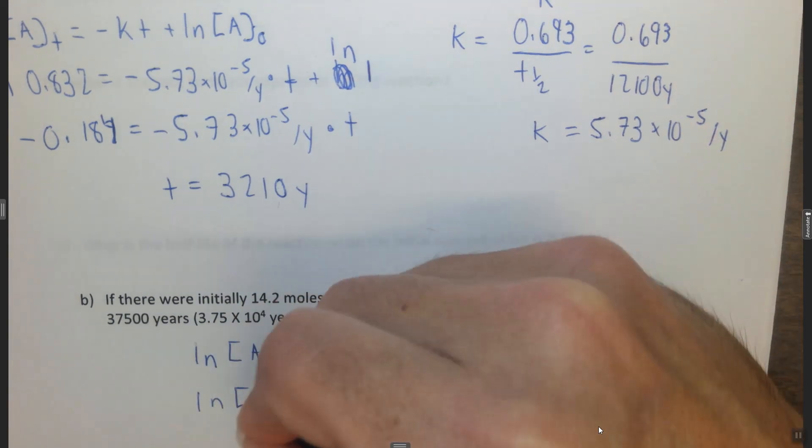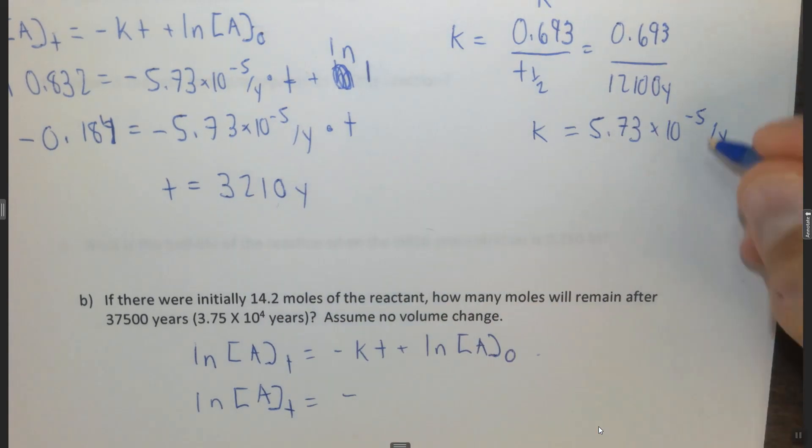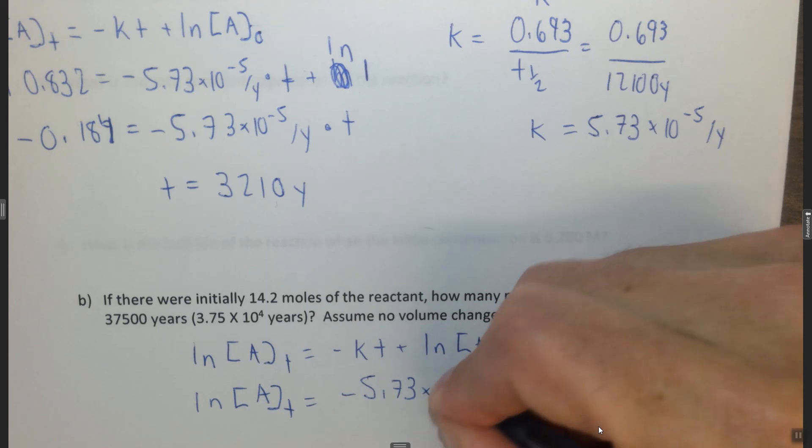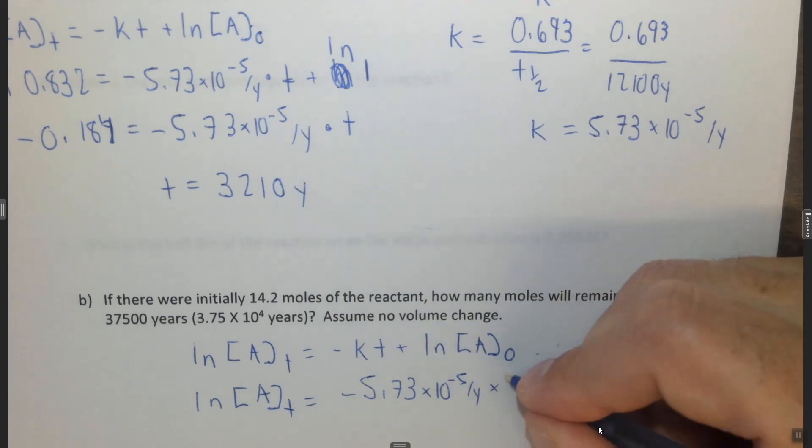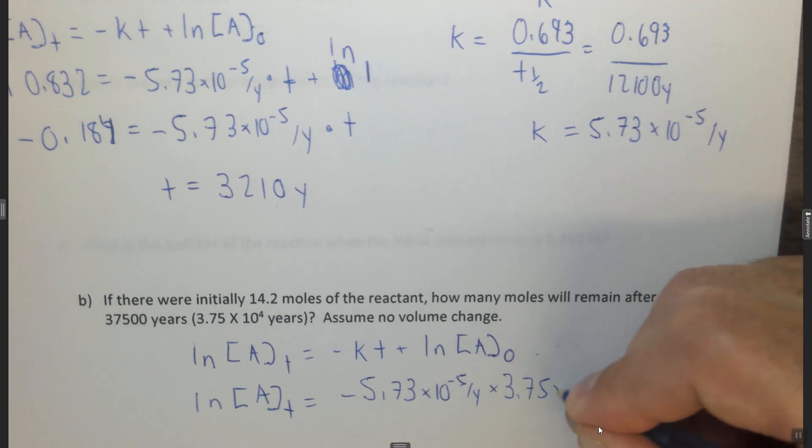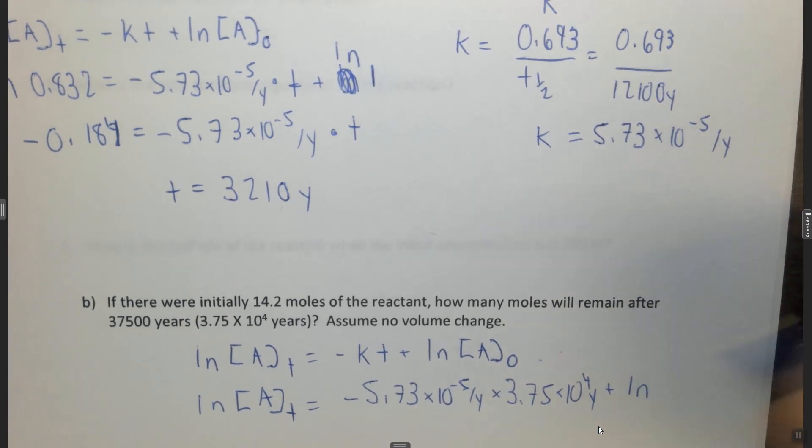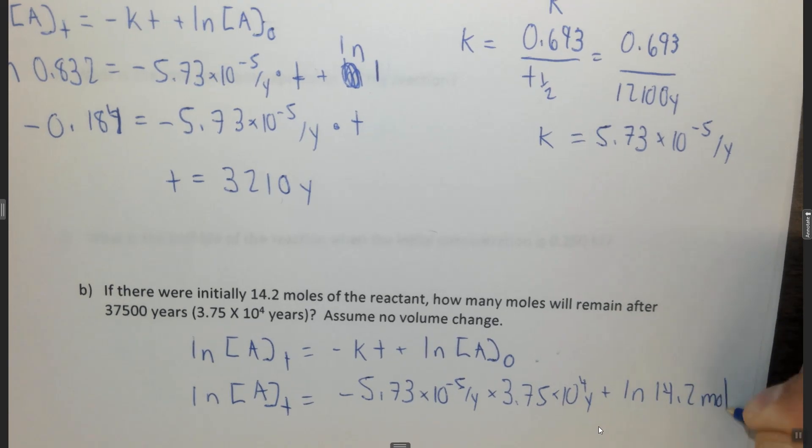So the ln of the concentration of A at some t, which is our variable, equals negative k, which we found before, 5.73 times 10 to the minus 5 per year times 3.75 times 10 to the 4 years plus ln of our initial 14.2 moles.